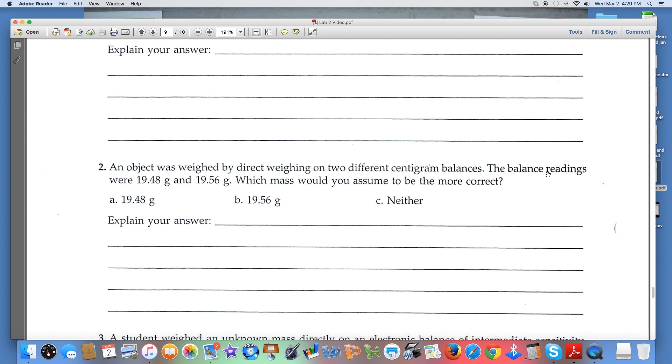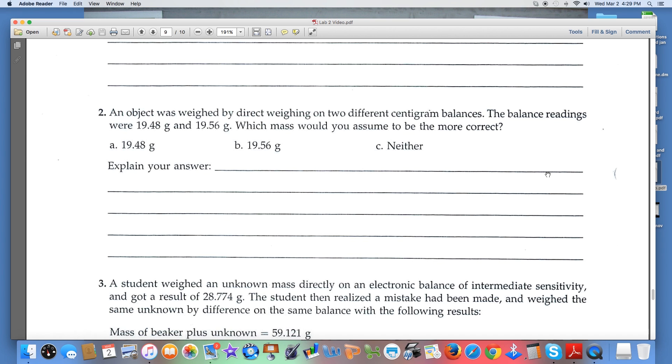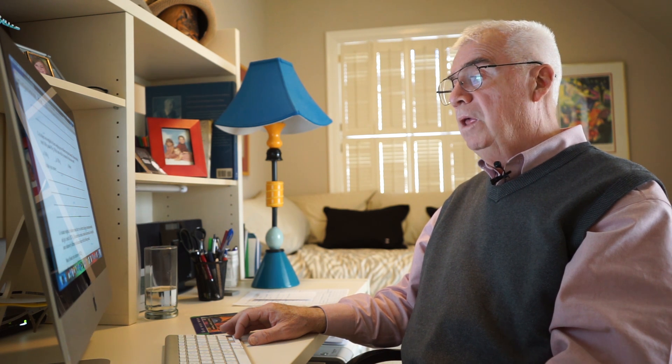Number two: an object was weighed by difference and we get two different values. We use two different scales, we get two different values. Which mass would we assume to be more correct? If I had two students and I asked what are the chances of rain tomorrow, and one student said I think the chances are 20% and the other student said I think the chances are 30%, which student is more correct? I have no idea.